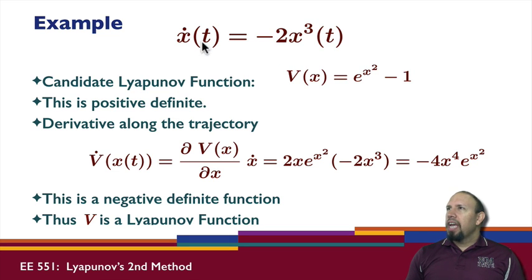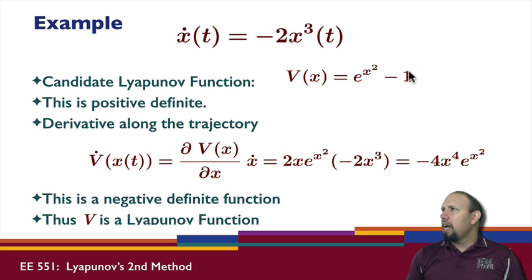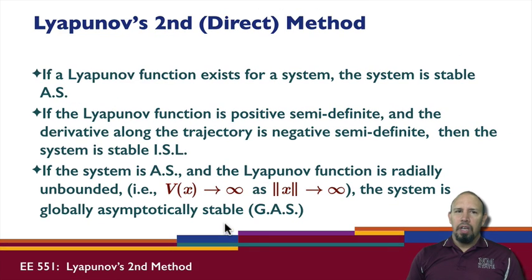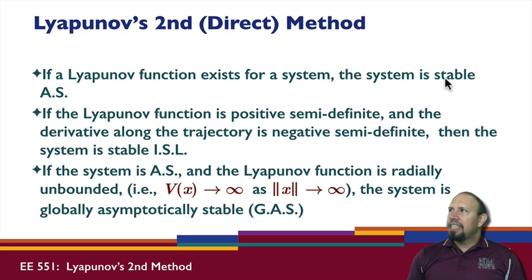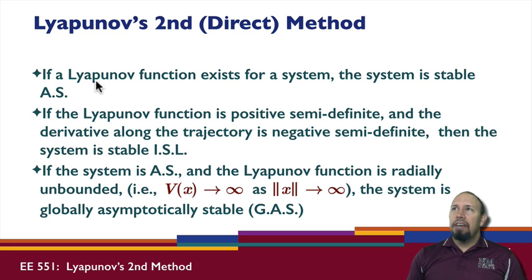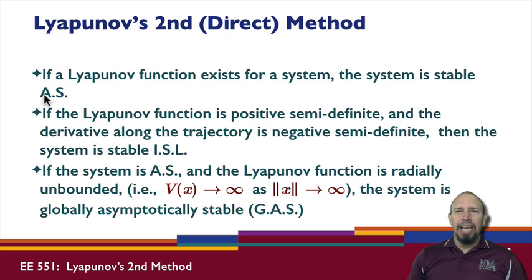Here's an example: x-dot equals — here's a candidate Lyapunov function. I take the derivative along the system trajectory and get this result. I can show that this is positive definite, and the derivative along the trajectory is negative definite, so v is a Lyapunov function. Here's what Lyapunov's direct or second method says: if a Lyapunov function exists for a system, the system is asymptotically stable. So if I have a system that has a Lyapunov function, the system is asymptotically stable — not just stable in the sense of Lyapunov, but actually asymptotically stable.